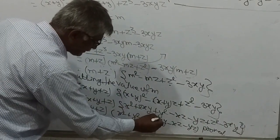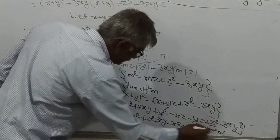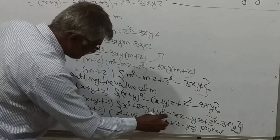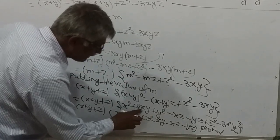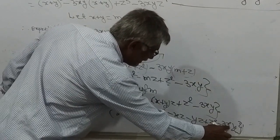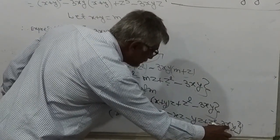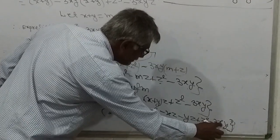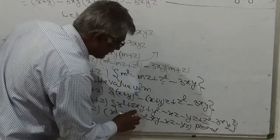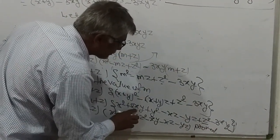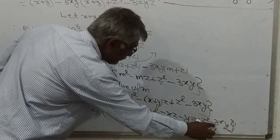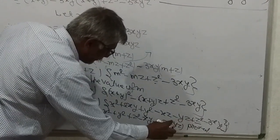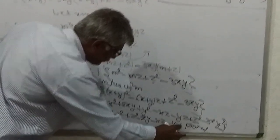Collecting terms: x² + y² + z², then 2xy − 3xy gives −xy, then −xz − yz. So the result is (x + y + z)(x² + y² + z² − xy − yz − zx), which completes the proof.